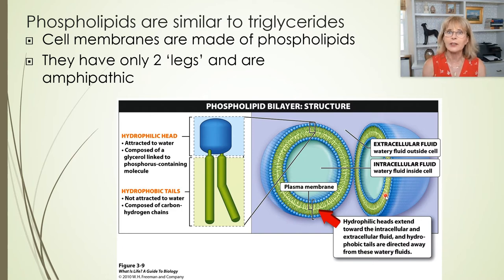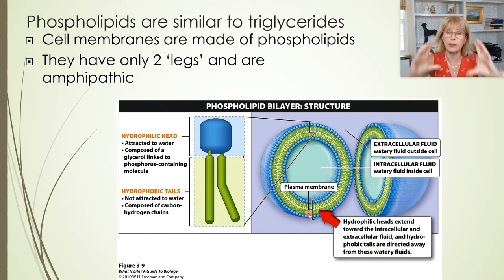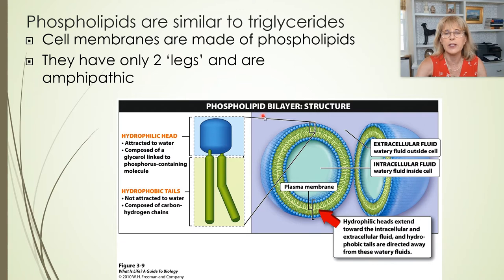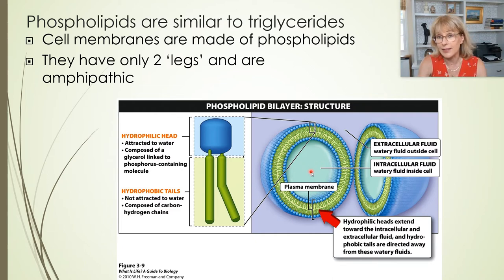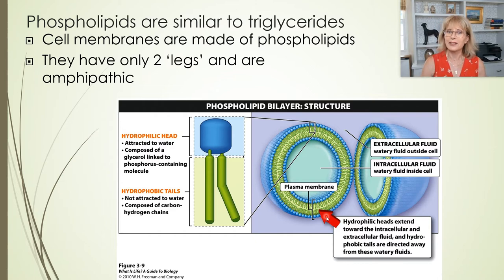Why do they happen? I want you to notice that there are two layers of phospholipid. There's one layer on the outside of the bubble — the hydrophilic heads are on the outside and the hydrophobic tails or legs are on the inside. And then on the inside of the bubble, there are hydrophilic heads orienting themselves towards the water inside the bubble, and hydrophobic tails pointing towards the middle of this layer. This is called the phospholipid bilayer.